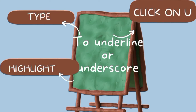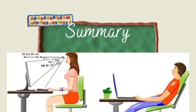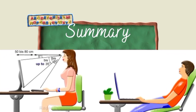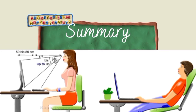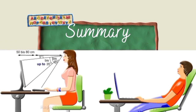Let's look at how to underline or underscore using the computer keyboard when typing. First, you type your words. Then secondly, you highlight those words typed. And then you click on U to underline. Remember that keyboarding is a communication tool in business studies that will help businessmen and organizations communicate with one another.